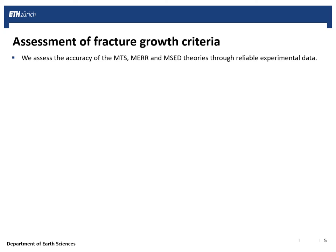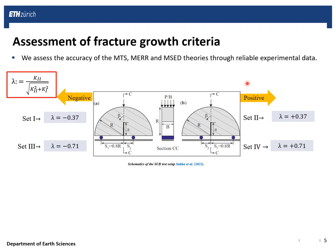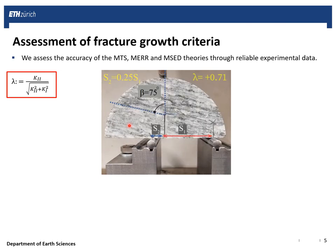Now we need to assess the accuracy of these three models through reliable experimental data. We had four different sets of mixed-mode loading with different mode mixity ratios lambda, which we could obtain simply by varying the ratios of S1 to S2. For each set, we also had different beta values, defined as the angle between the main notch and the foliation plane, varying between 0 and 90 degrees. According to this setup, we could observe the interplay between loading and anisotropy.